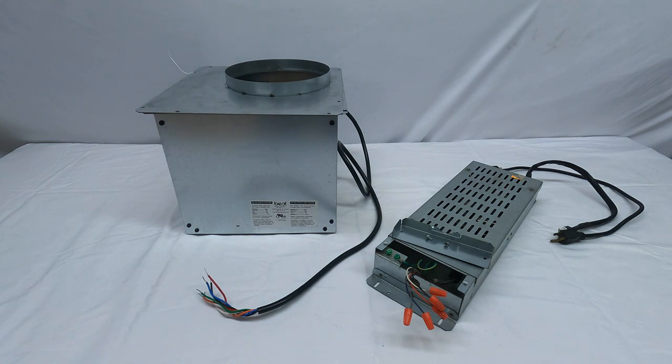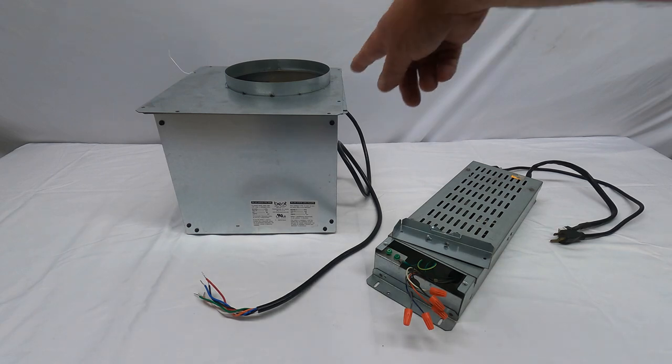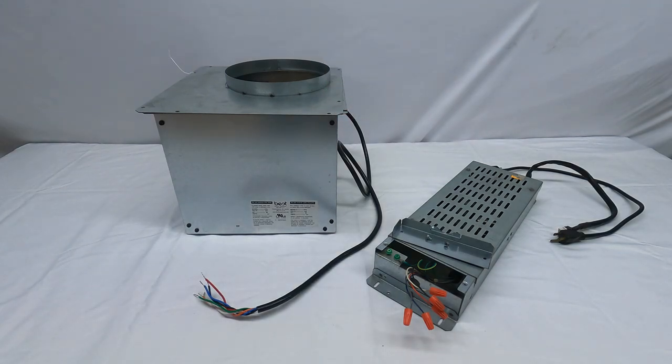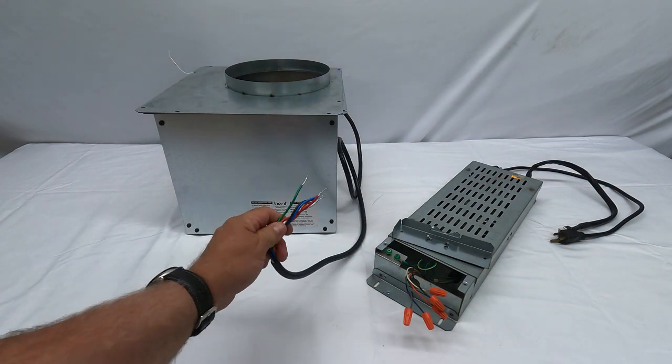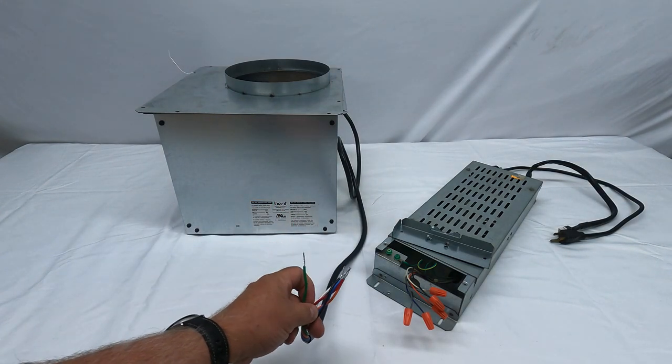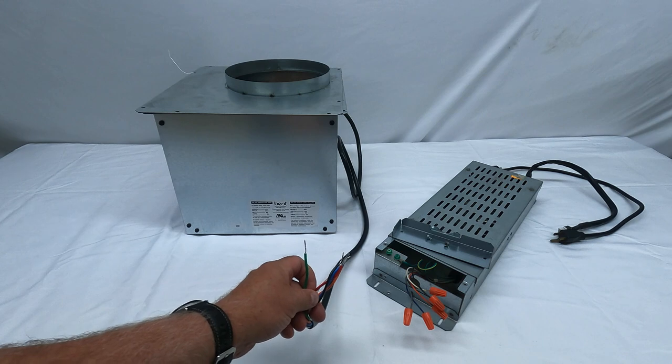Now this unit also has an option for basically what we call CRT, where you can limit the output of the PF6 blower to 400 CFM. What you would do here is you'd wire green to green, blue to blue, gray to red orange.